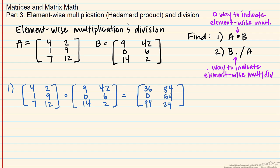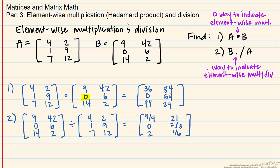It's a little trickier when you're dividing them. Mainly because if you'll notice that matrix B has a 0 in it, and you cannot divide by 0 even within a matrix. So in this case, we had to switch the order and we're dividing matrix A into matrix B. And similar to the way you did the multiplication, you simply divide each element by its corresponding element in the next. So 9 divided by 4, 42 divided by 2, 0 by 1, 6 by 9, 14 by 7, and 2 by 12.